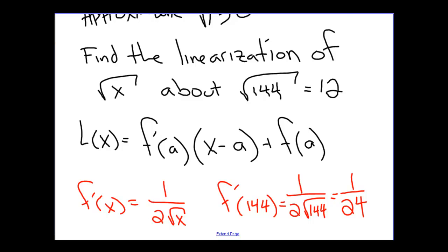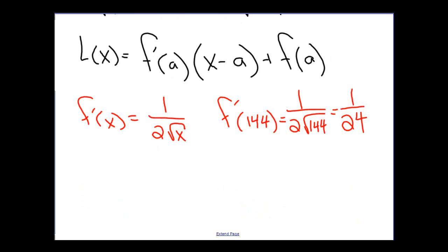So the linearization of the square root function, the approximation to the square root function about this point, is simply 1 over 24 times x minus 144 plus 12. Go back and look at the original linearization formula. It should have that in your notes now, and verify that we plugged everything in correctly.